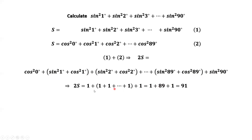The total sum of 2S is 91. The question asks us to find S. Therefore, S equals 91 divided by 2. This is the answer. That's all — thanks for watching and see you next time.